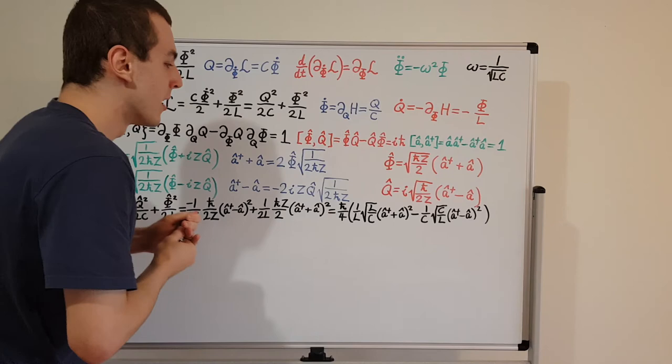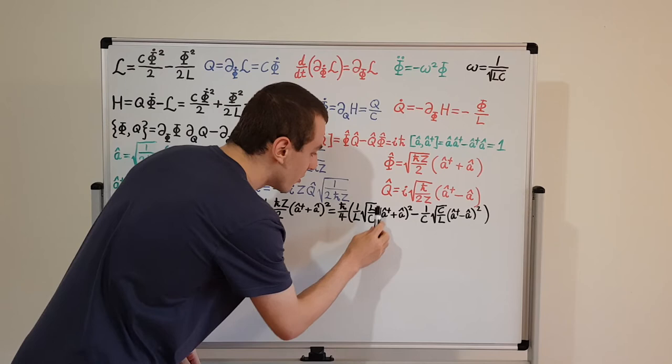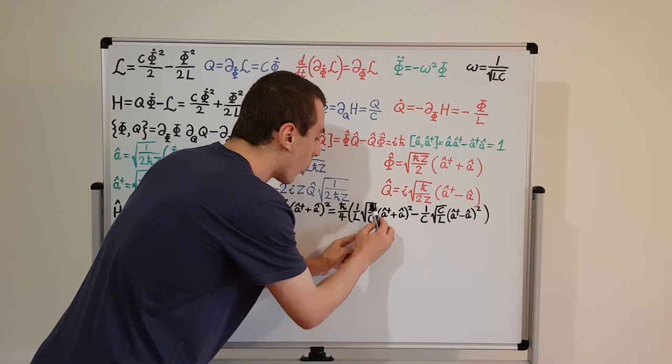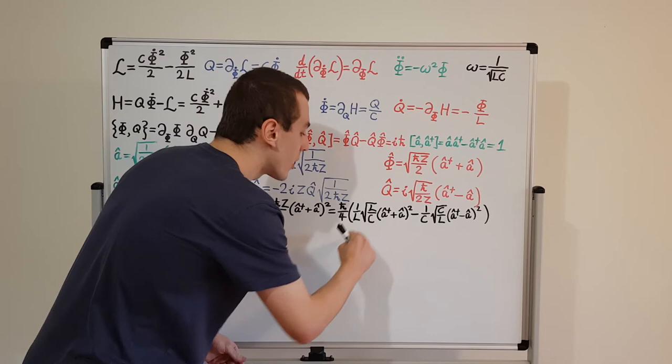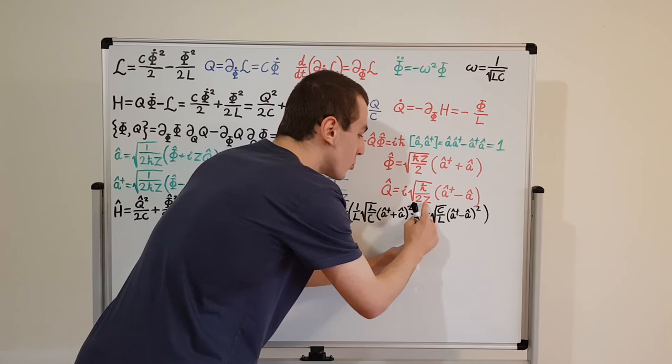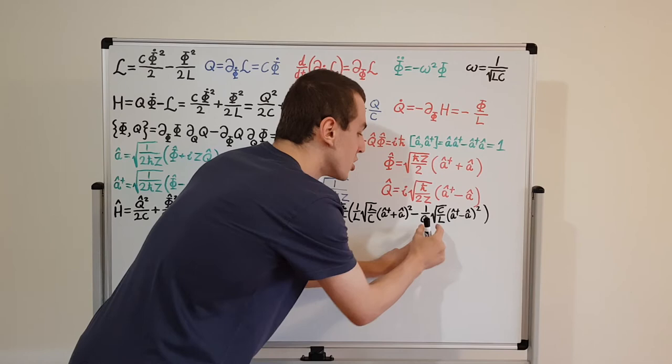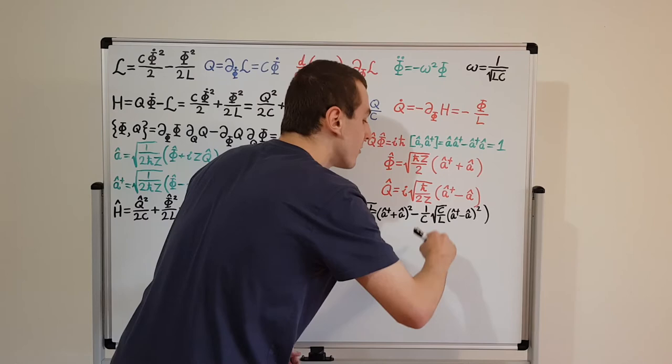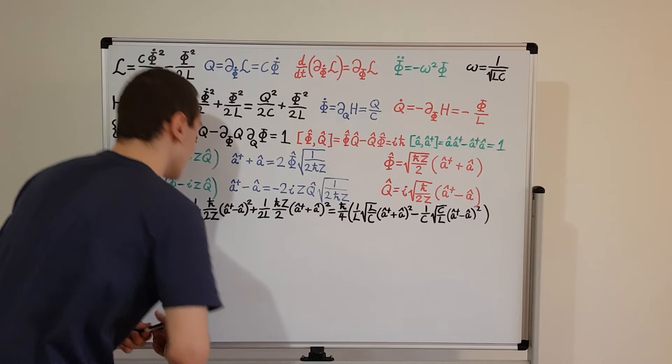We can notice that for the first term, 1 over L with L inside the square root in the numerator: bringing L inside makes 1 on L squared, and one factor of L cancels, giving 1 over the square root of LC. The same happens for the second term with C. So we can pull out the common factor 1 over the square root of LC, giving h-bar over 4 times 1 over the square root of LC.